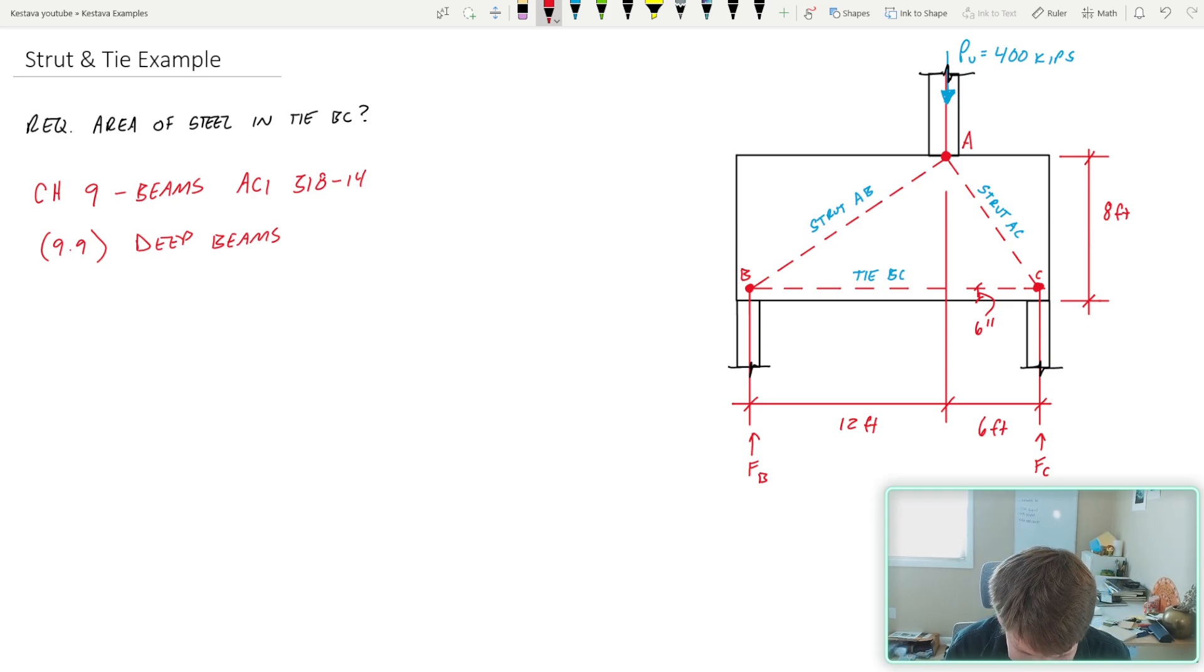So there are differences throughout that updated provision. So if you are doing a design, make sure that you are following those updates. But for today's example, I just have this with the 318-14. So apologies. Specifically, we're going to head to section 9.9, which is the deep beams section.